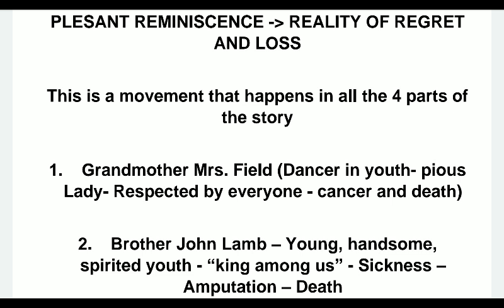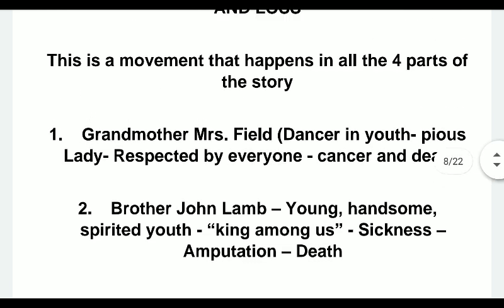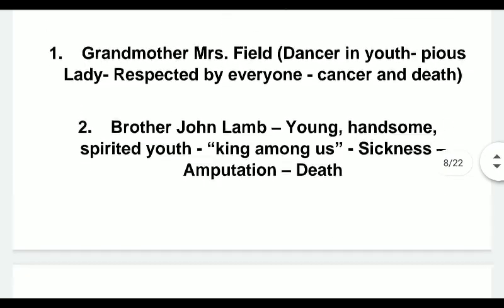The first part concerns Great Grandmother Mrs. Field — we see her as a dancer in her youth who grows into a pious lady respected by everyone and who knows the Psalms by heart. But then there's a decline — she has cancer and she dies. The same movement happens in the second part about the elder brother John Lamb. He was a young, handsome, spirited youth — Lamb says he was a king among them — but this declines into a painful sickness, amputation, and death. Again, movement from pleasant reminiscence to regret, loss, and pain.